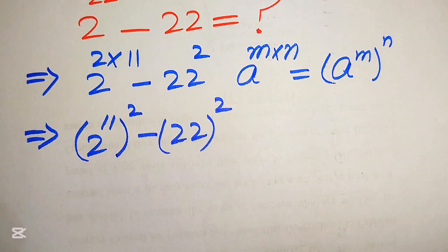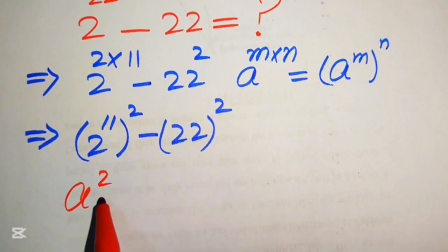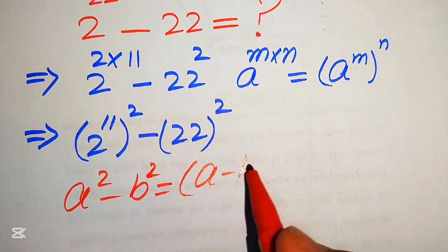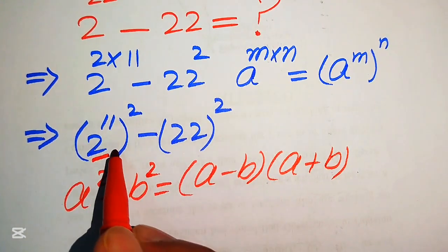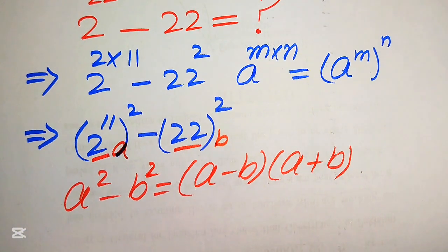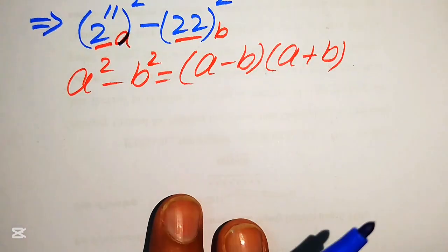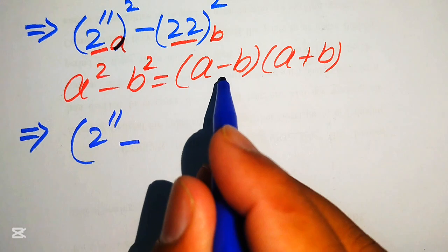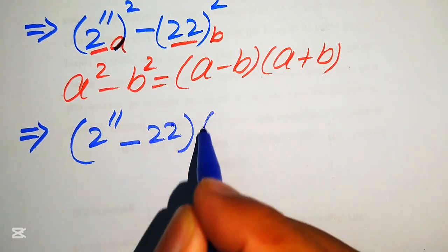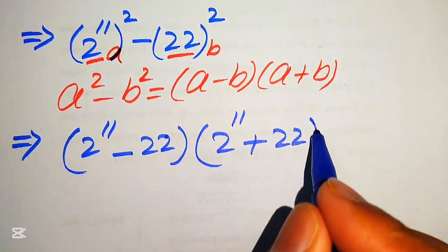In the next step we apply the algebraic formula: a squared minus b squared equals a minus b times a plus b. Here this is our a and this is our b. We put these two values into the formula, giving us 2 to the power of 11 minus 22, multiplied by 2 to the power of 11 plus 22.